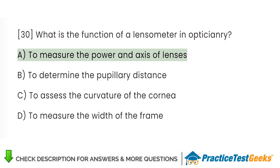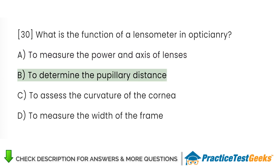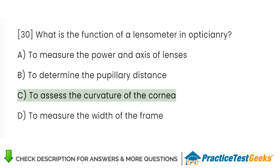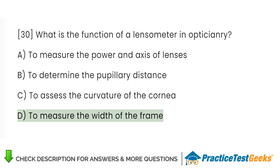What is the function of a lensometer in opticianry? A. To measure the power and axis of lenses. B. To determine the pupillary distance. C. To assess the curvature of the cornea. D. To measure the width of the frame.